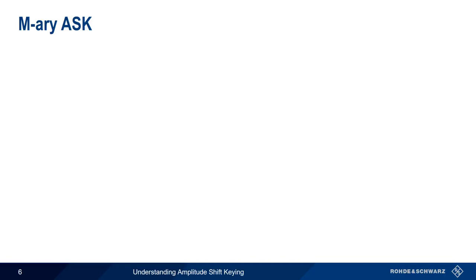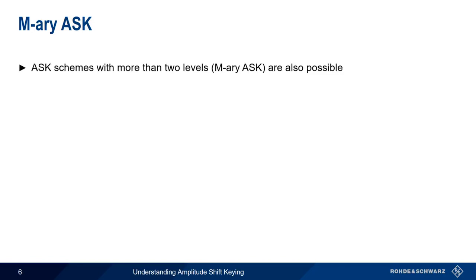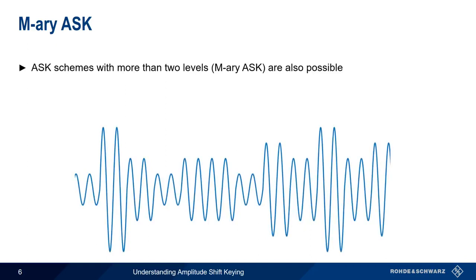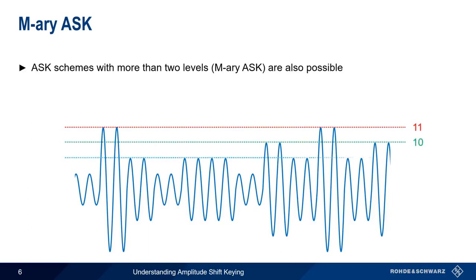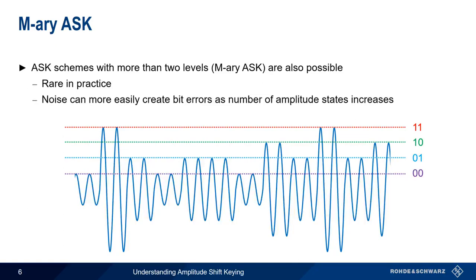All the examples of ASK that we've looked at so far show two levels, but it's possible to implement ASK with more than two levels. This is sometimes called M-ary ASK. For example, here we see the carrier taking on four different amplitude states. Each level corresponds to one of four different states, and each state can represent two bits. The use of more than two ASK states is, however, rather rare, largely due to the fact that noise can create more frequent bit errors as the number of amplitude states increases.